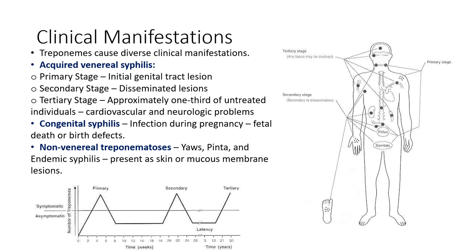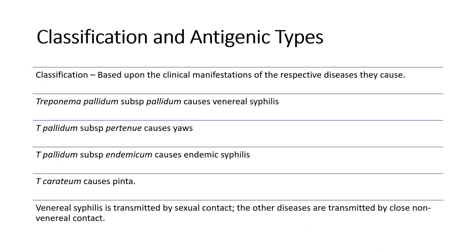In acquired venereal syphilis, the primary stage initially begins as a genital tract lesion, whereas the secondary stage involves disseminated lesions across the body. Meanwhile, the tertiary stage occurs in approximately one-third of untreated individuals and results in cardiovascular and neurological problems. Congenital syphilis is majorly an infection during pregnancy and results in fetal death or birth defects.